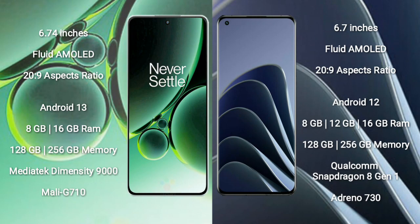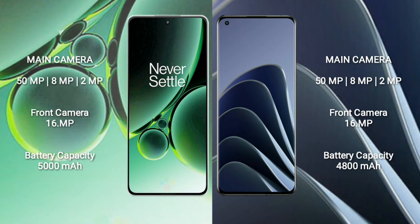OnePlus Nord 3 comes with 8GB or 16GB RAM and 128GB or 256GB internal storage, powered by a MediaTek Dimensity 9000 processor with Mali-G710 GPU. OnePlus 10T comes with 8GB, 12GB, or 16GB RAM and 128GB or 256GB internal storage, powered by a Qualcomm Snapdragon 8 Gen 1 processor with Adreno 730 GPU.